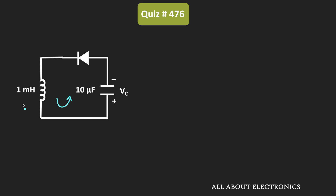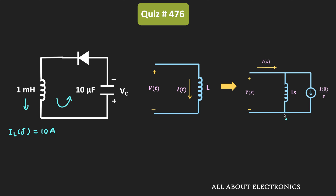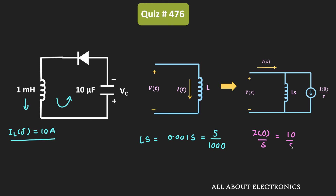The initial current through the inductor IL(0-) is equal to 10 A. In the equivalent S-domain representation, if I₀ is the initial current through the inductor, it can be represented with an impedance LS in series with a current source. Here L is equal to 1 mH, so LS is equal to 0.001 × S, or S divided by 1000. Since IL(0-) is 10 A, the current source I₀/S equals 10/S.